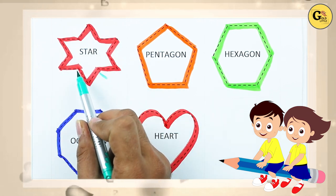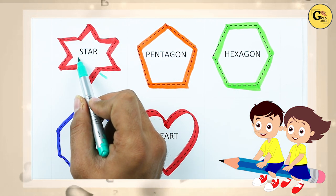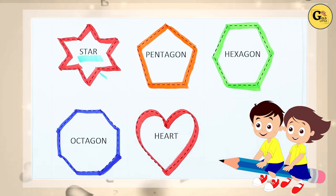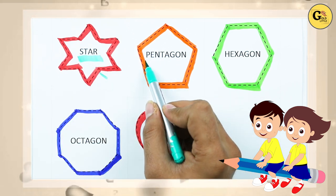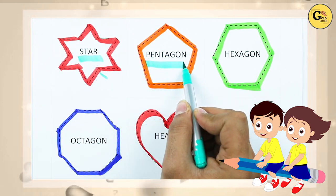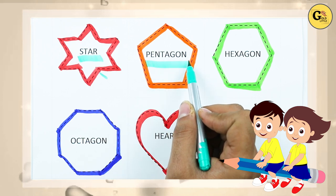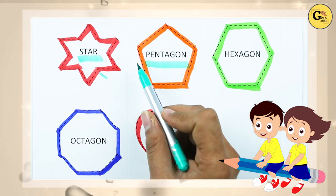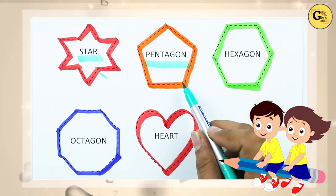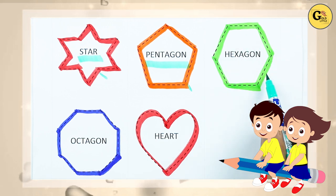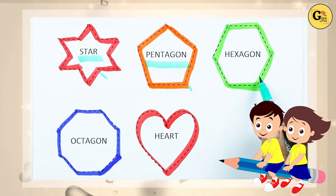Tell me — star! It's a star. It's pentagon — pentagon! With orange color. Which color is this? Green, right? And which shape is this?